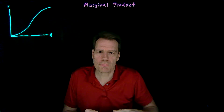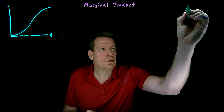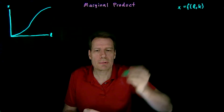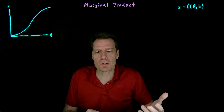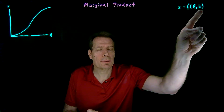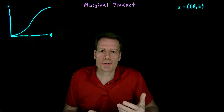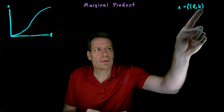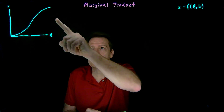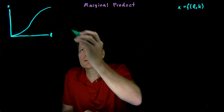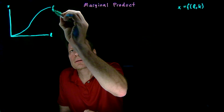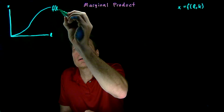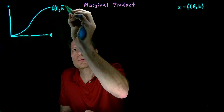We've now introduced the idea of a production function — a function that tells us, for any combination of labor and capital, how much output x we're going to be able to produce. We've shown what such a function looks like in three dimensions when we can vary both labor and capital. But in the short run, we'll assume that capital is fixed, so we'll operate on a slice of that three-dimensional picture. Along that slice, we have the production function that tells us, for any amount of labor, how much output we're going to produce, assuming capital is held fixed.